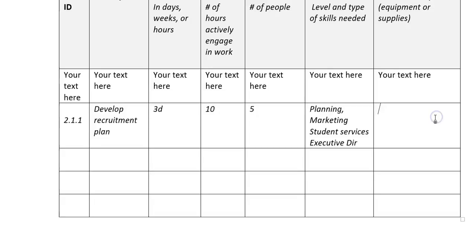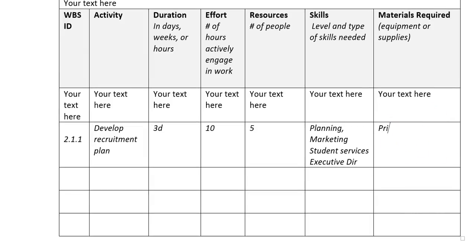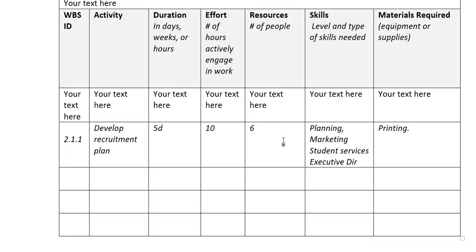There aren't any particular supplies we need, except maybe printing, but that could be in-house. If we have to get the executive director involved, assuming we can go from start to finish in three days is really unrealistic in terms of duration. So maybe we make that a week — let's call that five days. We're going back and revising our plan, and that's actually a sixth person involved. The hours of effort might have gone up to 11.